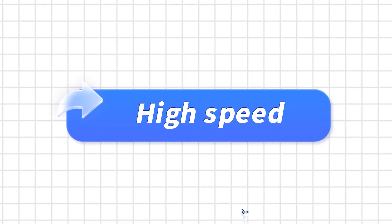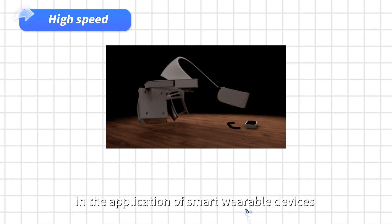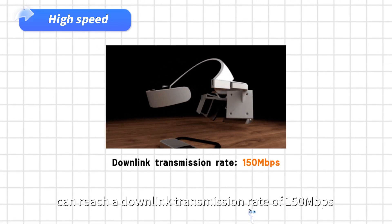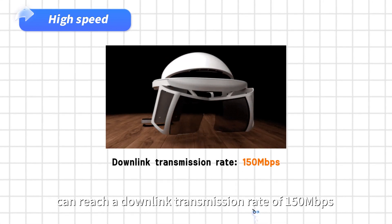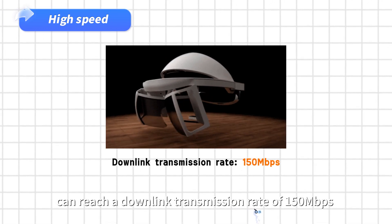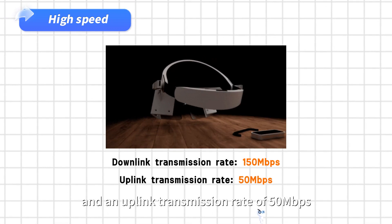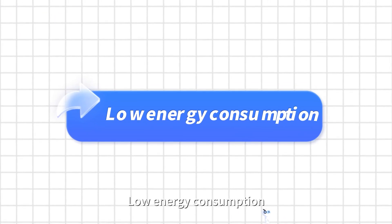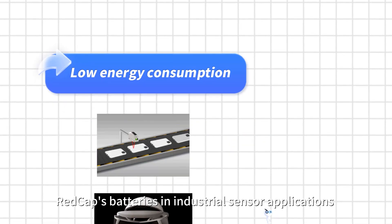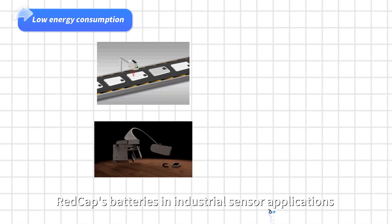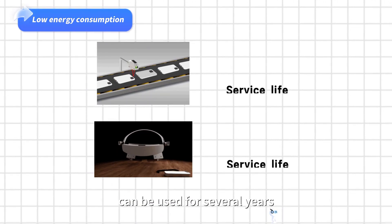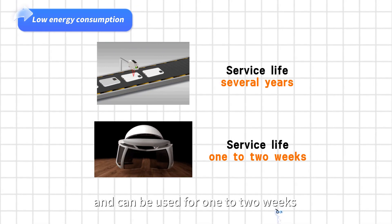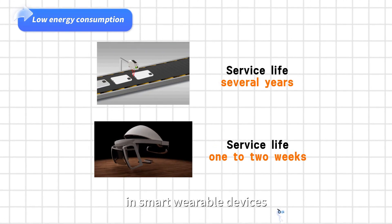High-speed: REDCap's transmission rate in the application of smart wearable devices can reach a downlink transmission rate of 150 megabits per second and an uplink transmission rate of 50 megabits per second. Low energy consumption: REDCap's batteries in industrial sensor applications can be used for several years, and can be used for 1-2 weeks in smart wearable devices.